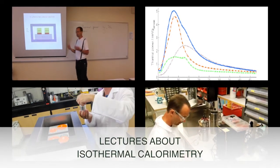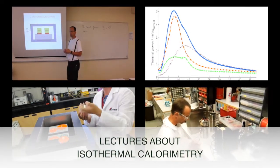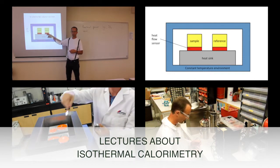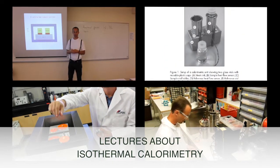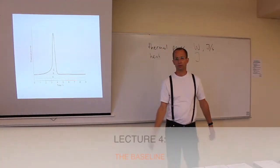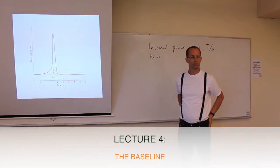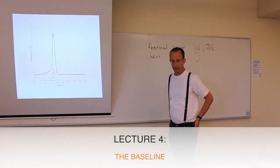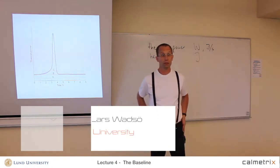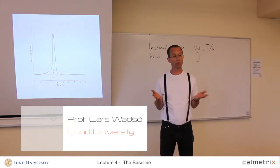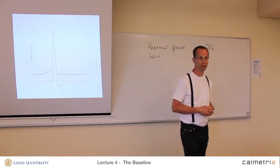In this lecture I will talk about the baseline, also called the offset. This is the signal from the calorimeter when there is no heat produced — no thermal power, zero thermal power. That signal is what we call the baseline.